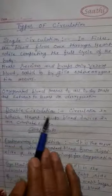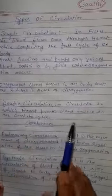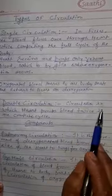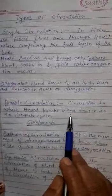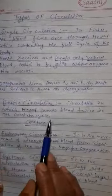Second type of circulation is the double circulation. It is seen in higher vertebrates. It is the circulation in which heart pumps blood twice in one complete cycle.